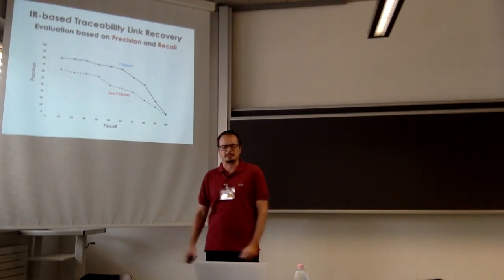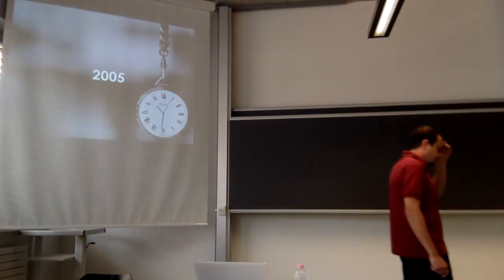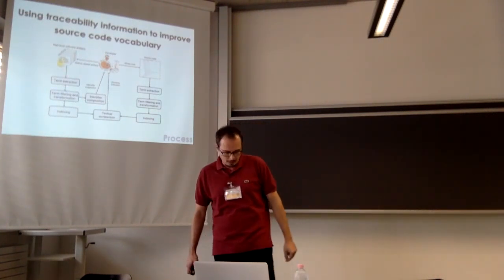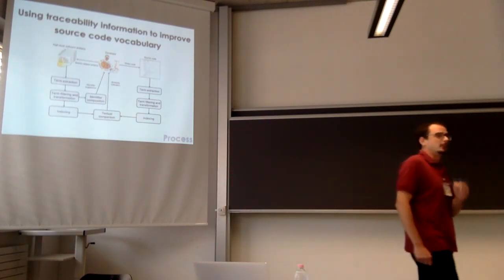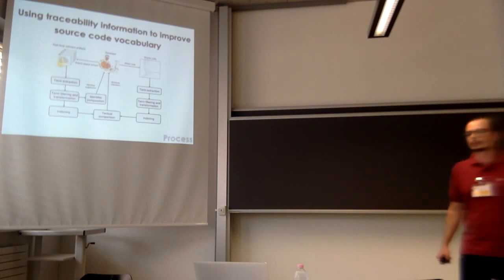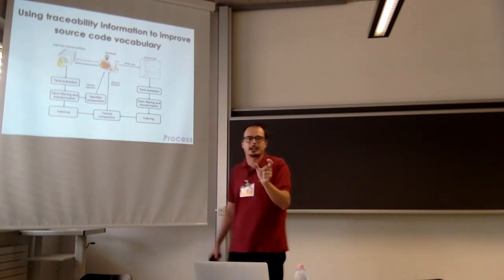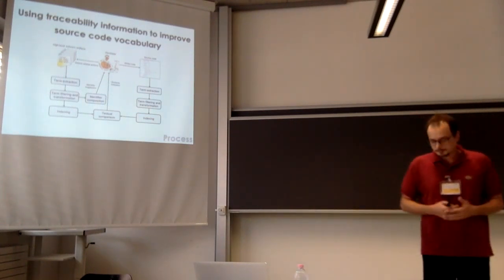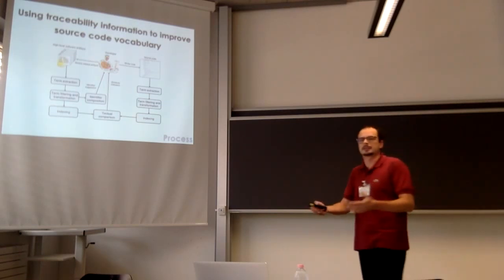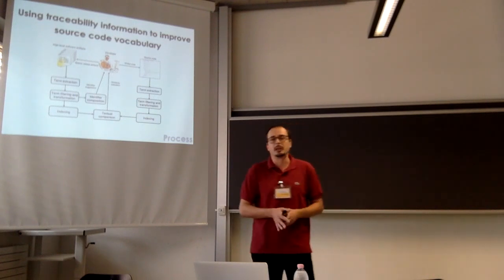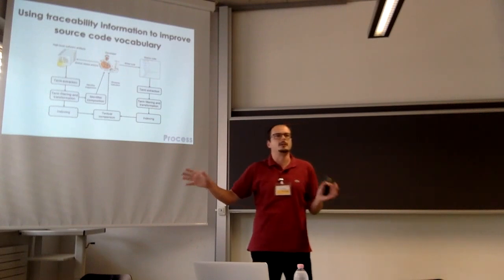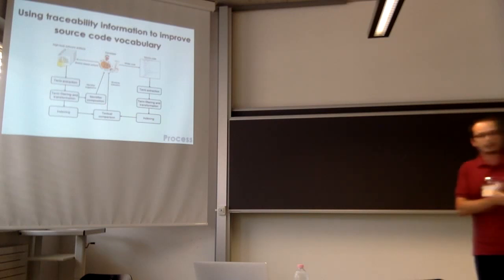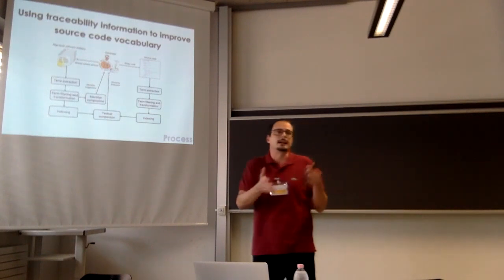I published some papers on IR-based traceability recovery, but in 2005 we had an idea — specifically, to use traceability information and information retrieval to improve the source code vocabulary. The source code vocabulary is represented by the identifiers you select when you write your code — for instance, variable names. Suppose you have traceability information between high-level artifacts, for instance use cases, and source code. If your code is properly written with a good vocabulary, the terms used in source code as variable names, constant names, method names, and so on should also be present in the documentation.